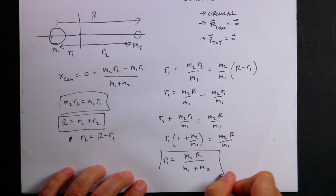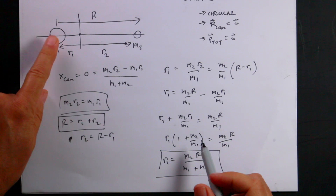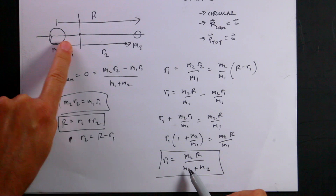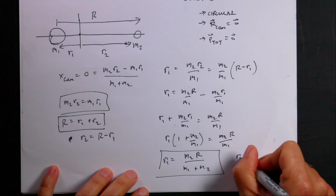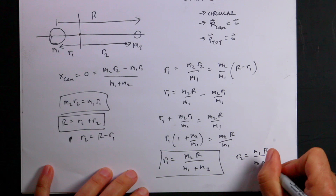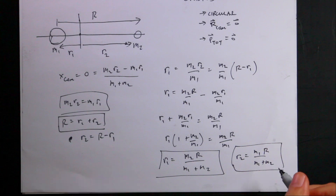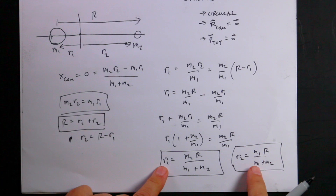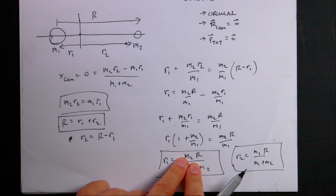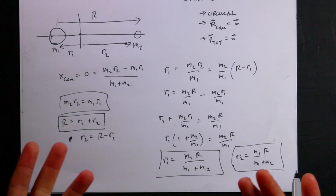Notice that if mass 1 is much larger than mass 2, then R1 is going to be smaller than R2. By symmetry, doing the exact same calculation, R2 equals M1·R divided by (M1 plus M2). You can verify this: if you multiply R1 by M1 you get M1·M2·R over (M1 plus M2), and multiplying R2 by M2 gives the same thing — which is exactly what the center-of-mass condition required. So now I have the positions of both masses.